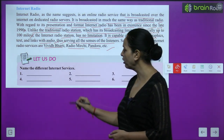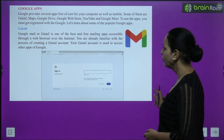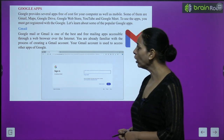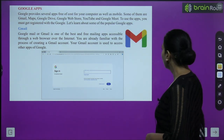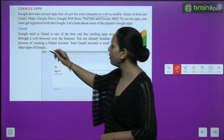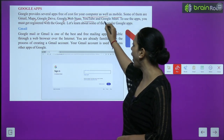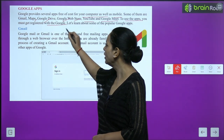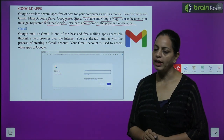Now let us name the different internet services — you can do this on your own. Moving on to Google Apps: Google provides several apps free of cost for your computer as well as mobile. Some of them are Gmail, Maps, Google Drive, Google Web Store, YouTube, and Google Meet. To use the apps, you must get registered with Google.